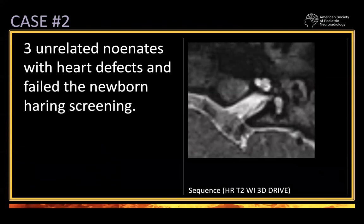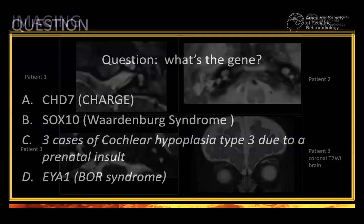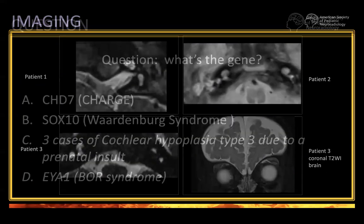Case two is actually three cases — very similar. Three unrelated neonates with heart defect and failed newborn hearing screening. I will show you just one screenshot. Look at the cochlea here — that's enough to do the diagnosis. Also shown is a quite anterior coronal T2 of patient three. Look at the appearance of the ears in these three patients. There is something missing, something wrong in all three patients.